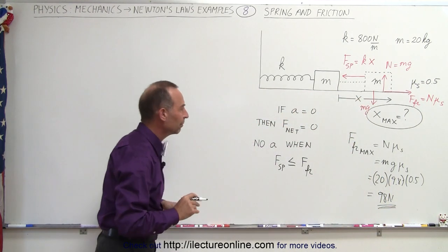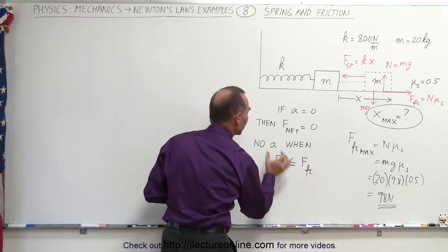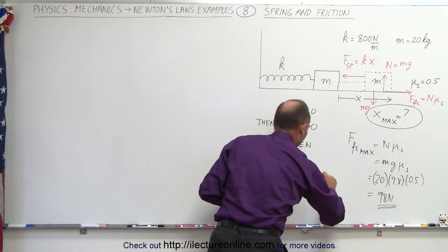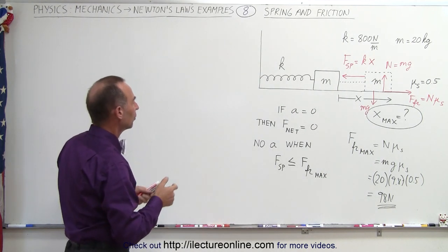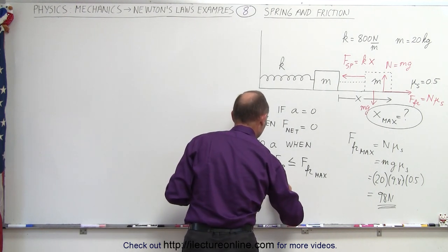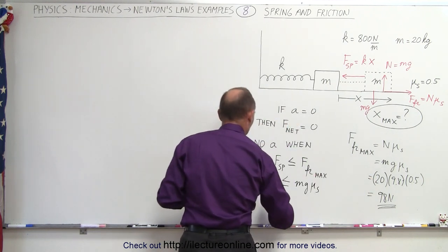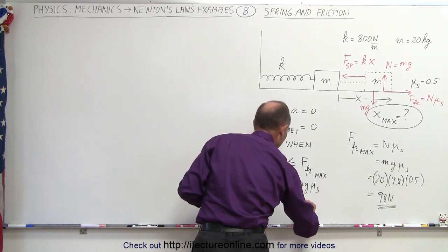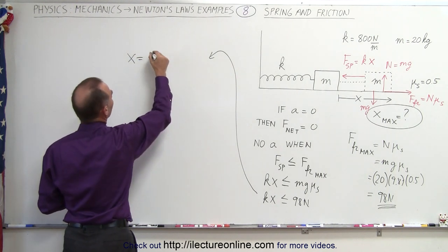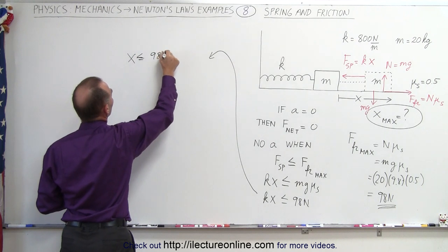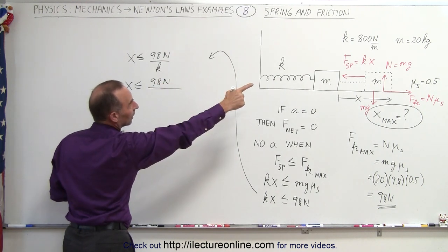Now let's find what x will be when the friction force equals its maximum, which equals the force caused by the spring. The force of the spring, kx, must be less than or equal to the maximum friction force — in this case mg × mu sub s = 98 newtons. Solving for x: x must be less than or equal to 98 newtons divided by k, which is 98 divided by 800 newtons per meter.